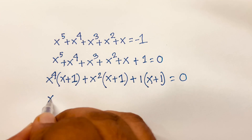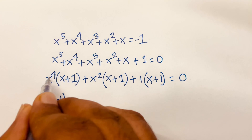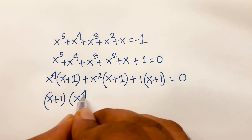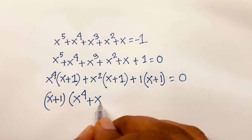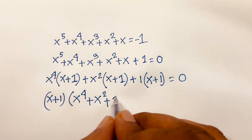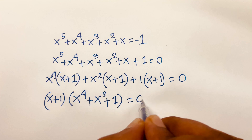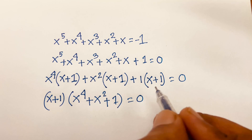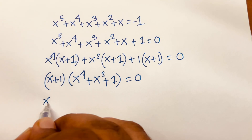Then I can see easily that (x + 1) is a common factor. Dividing through, this gives (x + 1) times (x⁴ + x² + 1) is equal to zero.